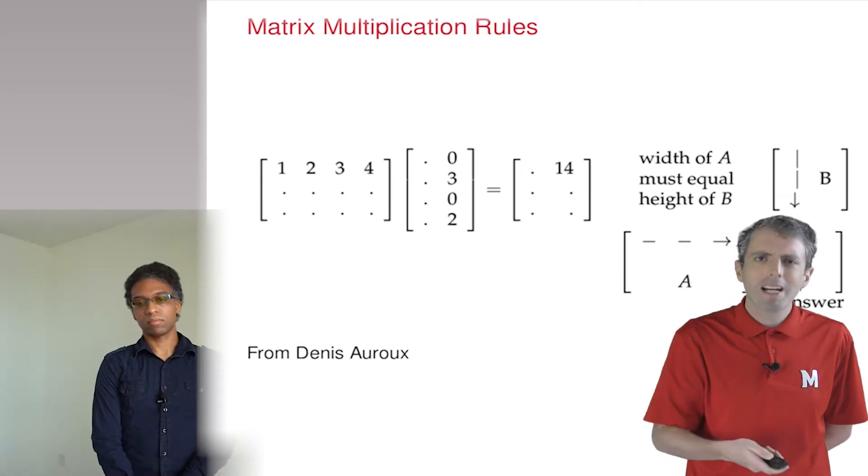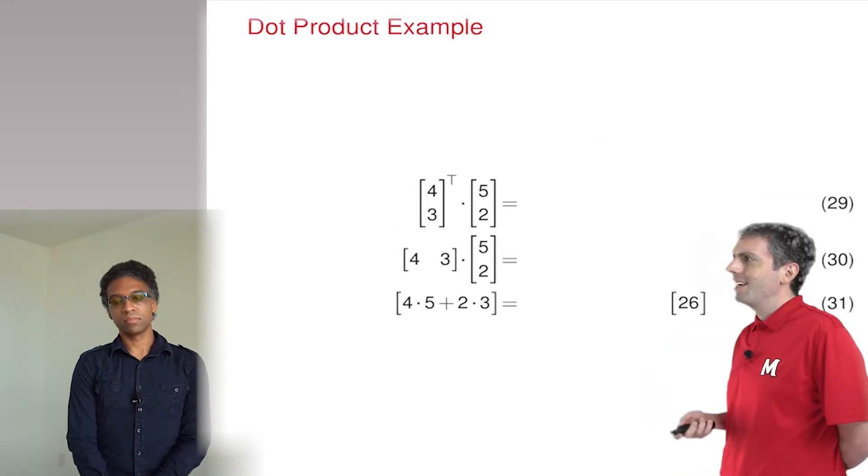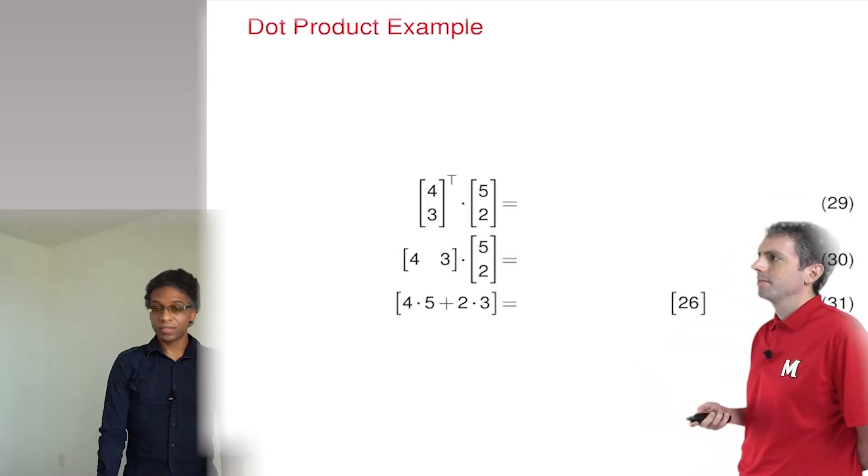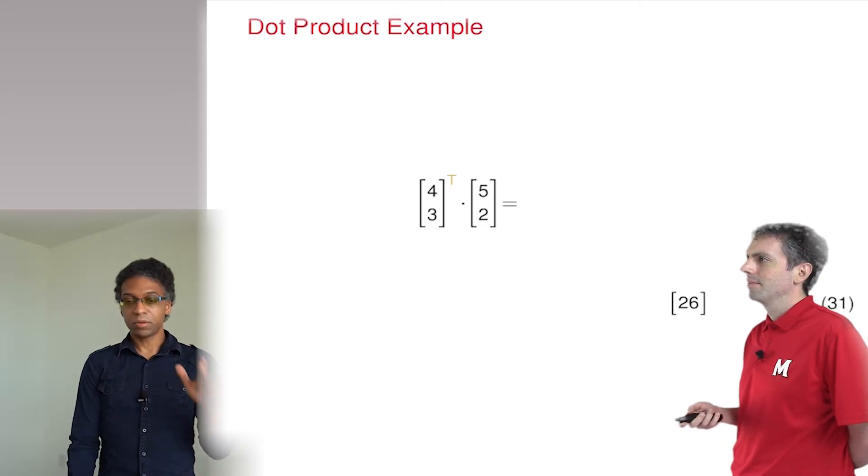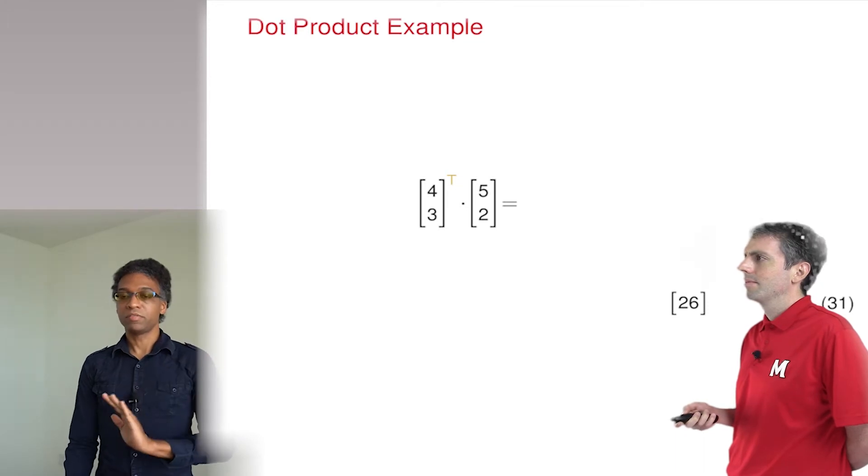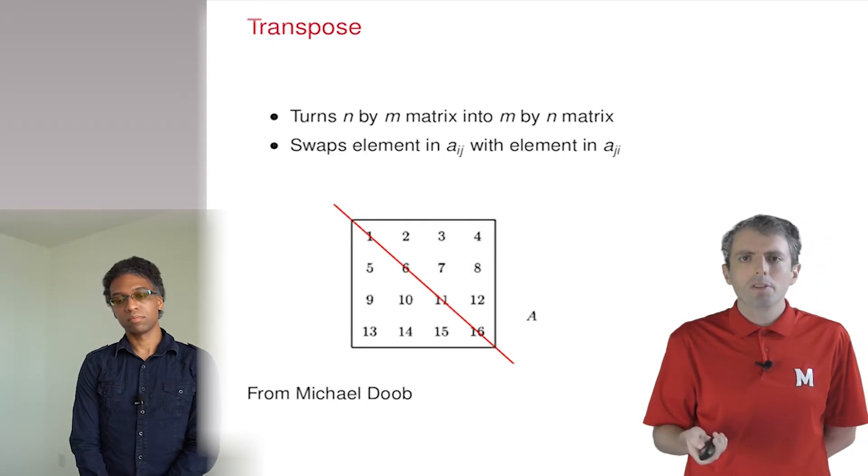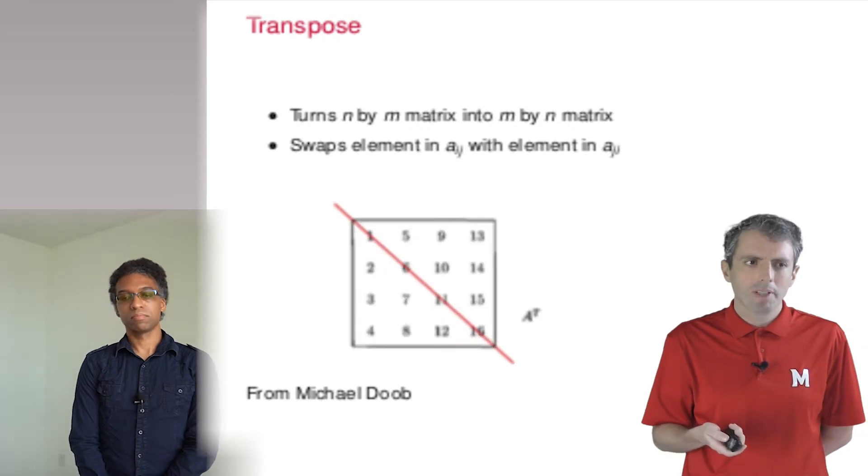Wait a second. Let's go back to the dot product with vectors. That wasn't the case there. Oh, but it was. Didn't you see the transpose symbol? The transpose of a matrix reflects its values along its diagonal, flipping it on its side. So the rows become columns, and the columns become rows.